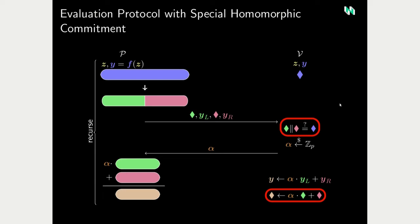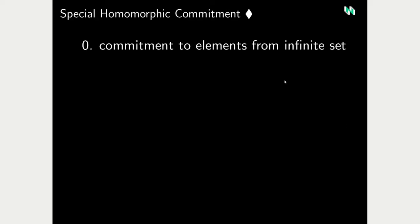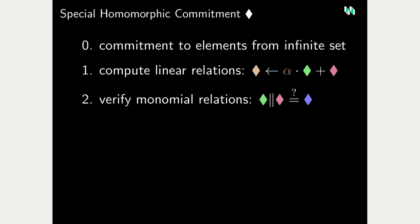This commitment scheme needs to provide the verifier with certain capabilities. First, the commitment needs to be able to commit to elements from an infinite set—we're dealing with arbitrary polynomials but want to send only short messages. Second, the verifier needs to compute linear relations on commitments that carry over to the polynomials they commit to. Third, the verifier needs to verify this concatenation of coefficient lists, which boils down to multiplying the red polynomial by a monomial and adding the two to check against the blue polynomial—essentially verifying a monomial relation.